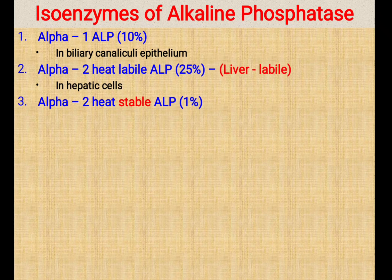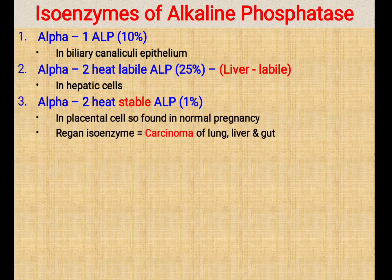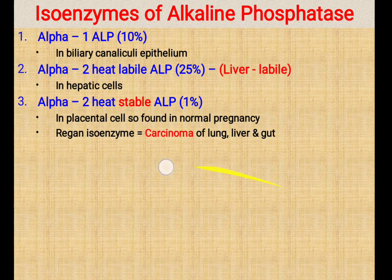The third isoenzyme is Alpha-2 heat stable. This Alpha-2 heat stable ALP is just 1% of the total alkaline phosphatase and it is produced mostly by the placenta. So during normal pregnancy, this enzyme is produced from the placenta. It is also called the Regan isoenzyme, and its level is found to be elevated in carcinoma of the lung, liver, and gut. Normally it is just 1%, produced mainly by placental cells, but during carcinoma of lung, liver, and gut its level is also increased.